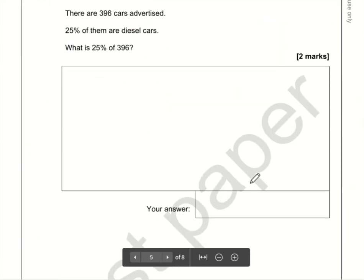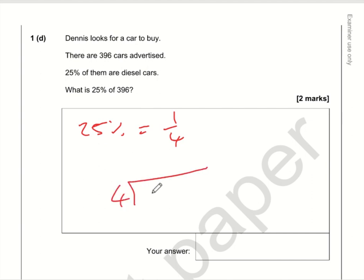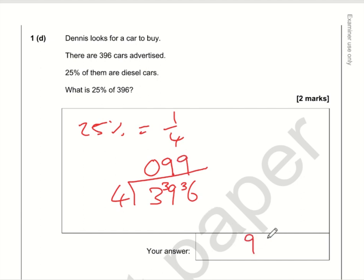Part D: the key thing here is remembering that 25% is one quarter. You could work out 10%, then 5%, then double to 20% and add, but it's simpler to just divide by 4. So 396 divided by 4: 3 divided by 4 can't be done, so carry the 3. 39 divided by 4 is 9 remainder 3. 36 divided by 4 is 9. The answer is 99.